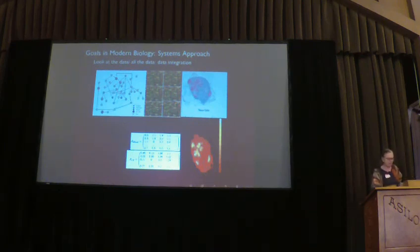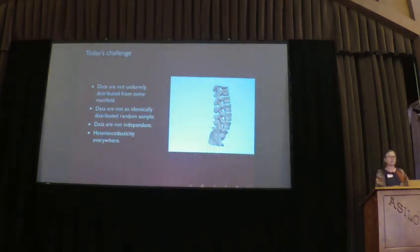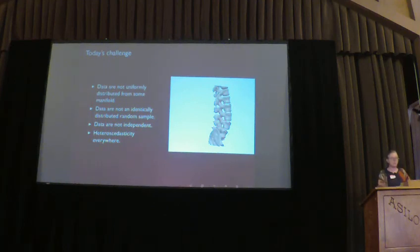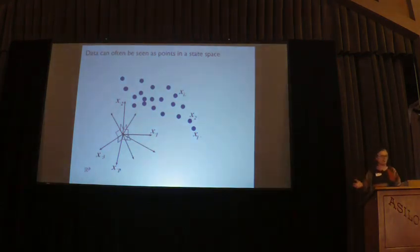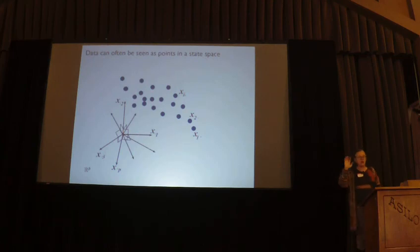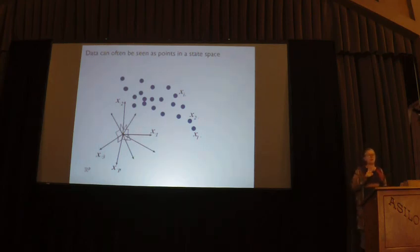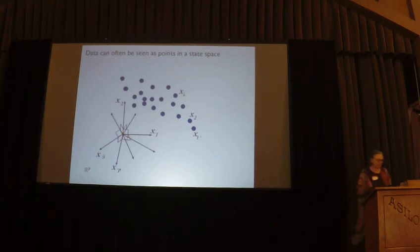This is a typical example: a lymph node with cancer and various networks that go with it. The challenges are that the data are never uniformly distributed on any manifold. The data aren't IID in any way, so you can't use standard statistics. They're not independent, and we have a lot of heteroscedasticity — a long word for saying that the variances are different in different places of the state space. The way I think about data is geometric: you have points which are observations in some sort of space, here placed with their variables as coordinates in a Euclidean space.